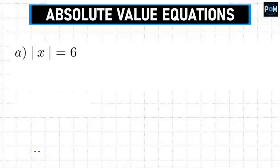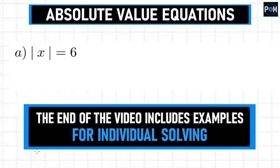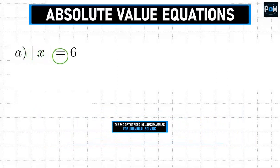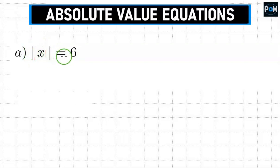Welcome to the Planet of Maths channel. In today's video, we'll be solving an equation with an absolute value. The first example is the absolute value of x equals 6. To solve such an equation, we need to think about what would have to be inside so that we get the absolute value of it to come out as 6.